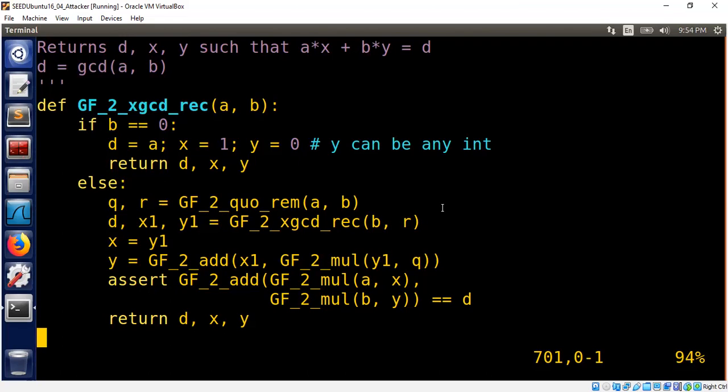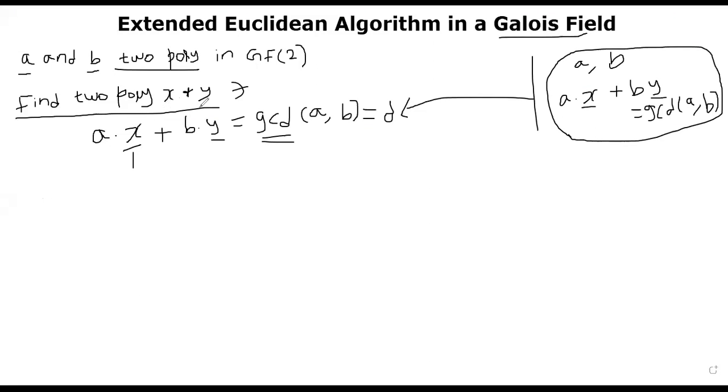I'll now show you very quickly how we can find inverse using this algorithm. Suppose we found out the two polynomials X and Y, what can we do with this? So we do know that A is input.